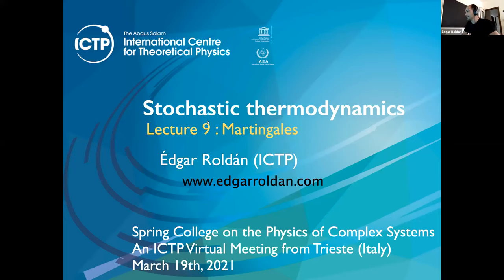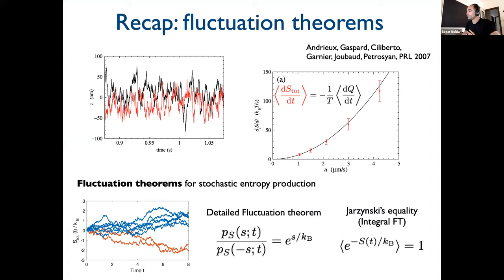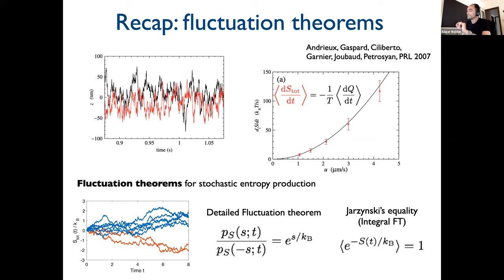However, what I'm explaining today is not exactly the same thing — it's related to what we call martingales and the formulation of stochastic thermodynamics using martingales. First, before telling you what a martingale is, I will recap fluctuation theorems. The detailed fluctuation theorem, which I explained in the bottom figure: the probability in a steady state to produce entropy for an amount S is much larger than the probability to produce entropy for amount minus S in a given time T.